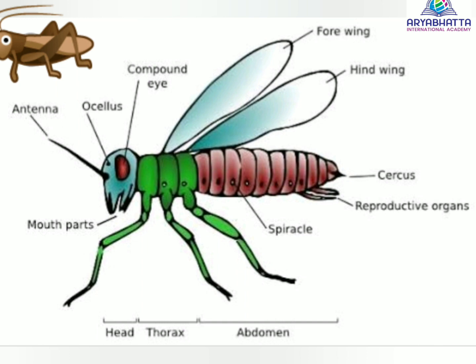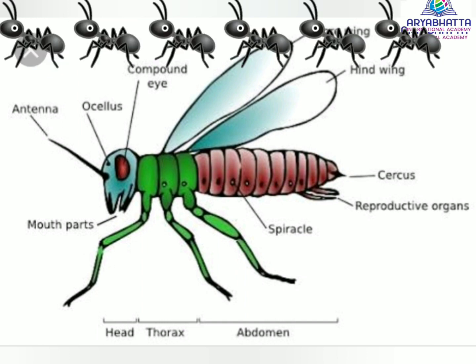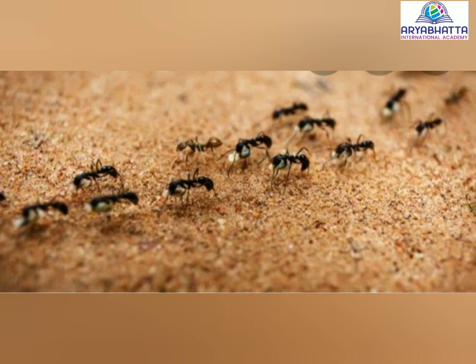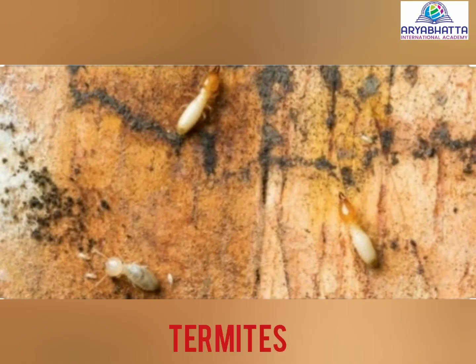Social insects. Insects either live alone or in groups. Insects such as termites, ants and honeybees live in groups. They are called social insects. Three general features are observed in social insects.